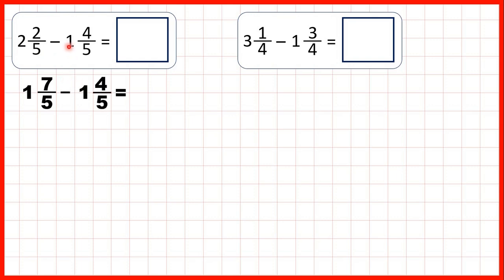So now we can subtract 1 and 4 fifths. We subtract the fractions first and 7 fifths minus 4 fifths is 3 fifths, because remember we keep the denominator the same. And now if we look at our whole numbers, because we've exchanged we have 1 minus 1, so that's 0. So our answer is just 3 fifths.